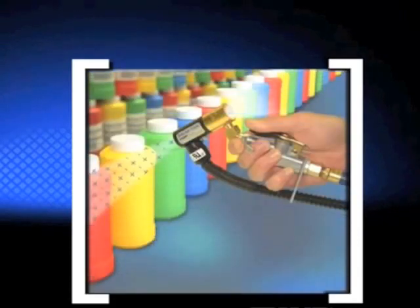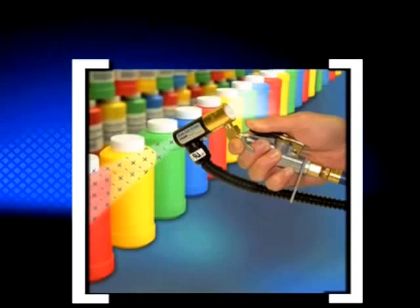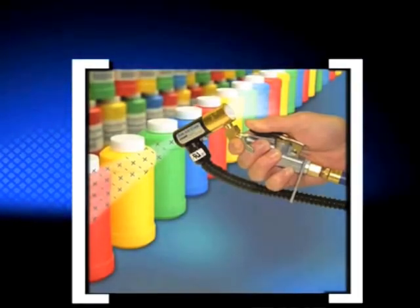X-Air's ion air gun combines incredibly fast static decay rates with low air consumption. It's shown here blowing off dust and contaminants from plastic bottles prior to applying the label. It's commonly used to eliminate static and dust from three-dimensional parts prior to packaging.